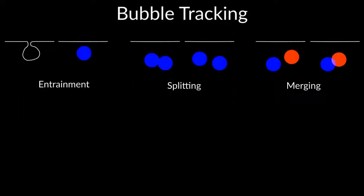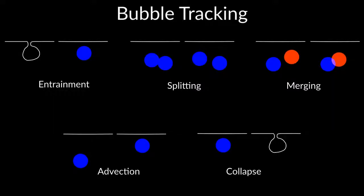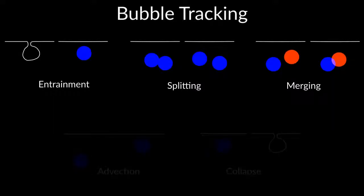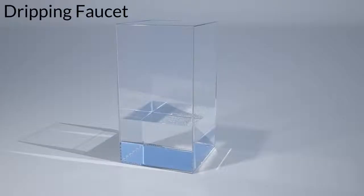To get accurate bubble shapes in motion, we use a two-phase incompressible fluid solver, which we modify to track bubbles between time steps. The actions we track include entrainment, splitting, merging, advection, and collapse. Surface tension effects during entrainment, splitting, and merging are what cause most bubble vibrations. This allows us to generate fluid sounds such as these.